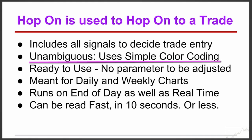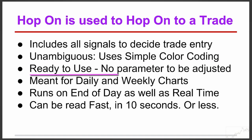Hop-on makes it really easy to see what is going on in the chart. There is no confusing convergence-divergence, no reading of value or value range of the indicators. The entire template is designed with consistent color coding — green is bullish, red is bearish, yellow is neutral. Hop-on is ready to use. There is no need to spend hours to find that elusive perfect setting of the parameters. In fact, there is no parameter to be set.